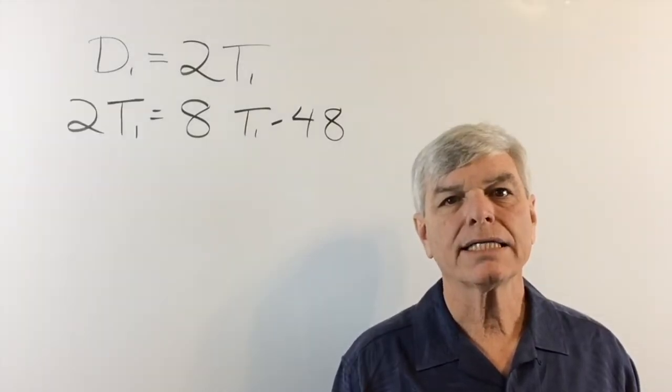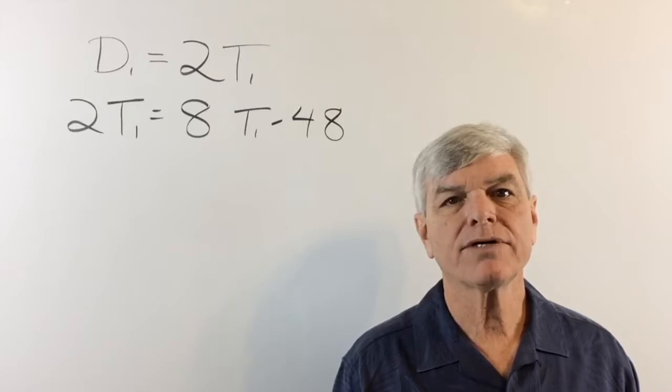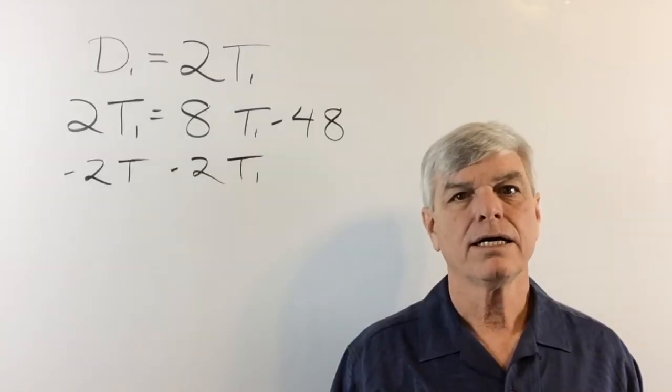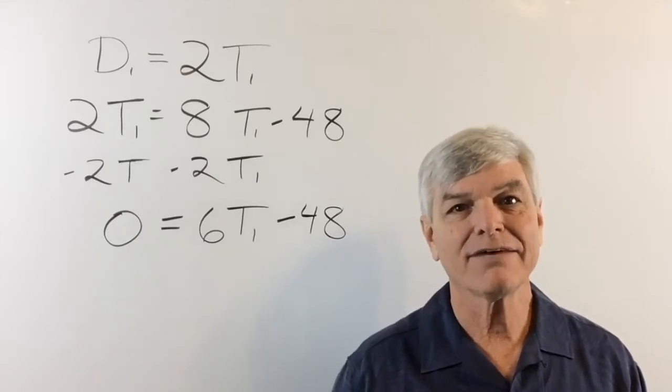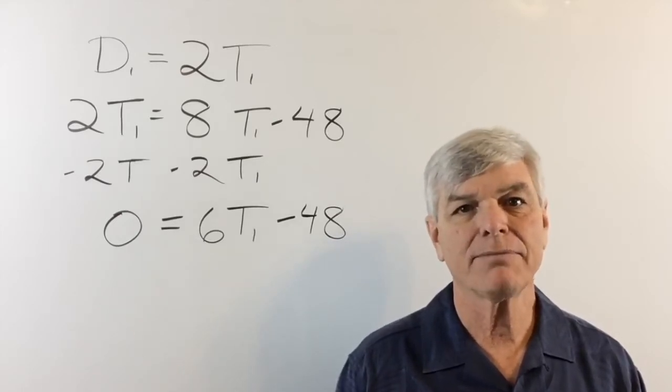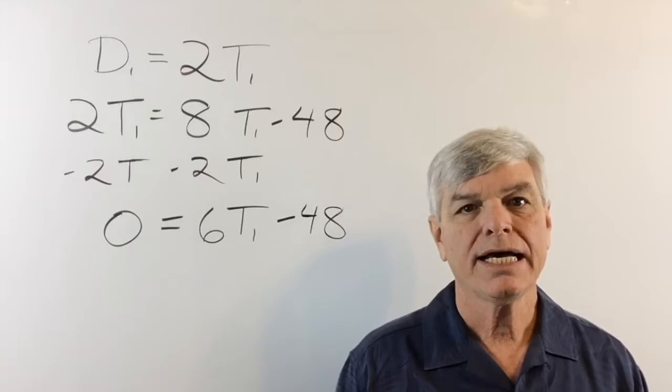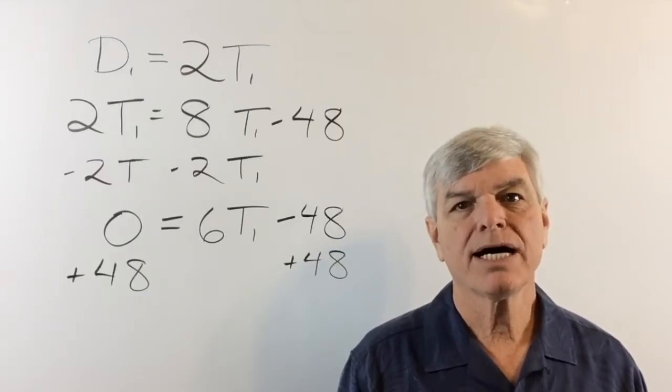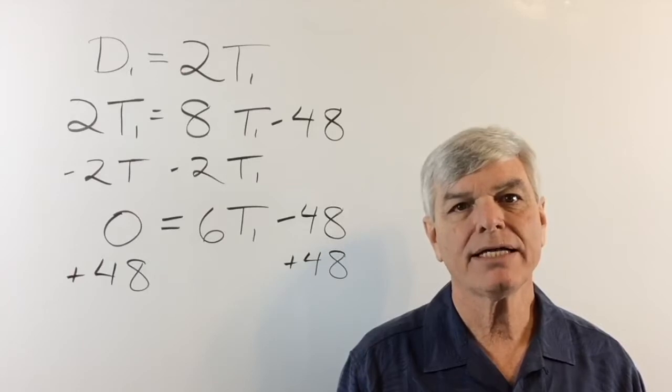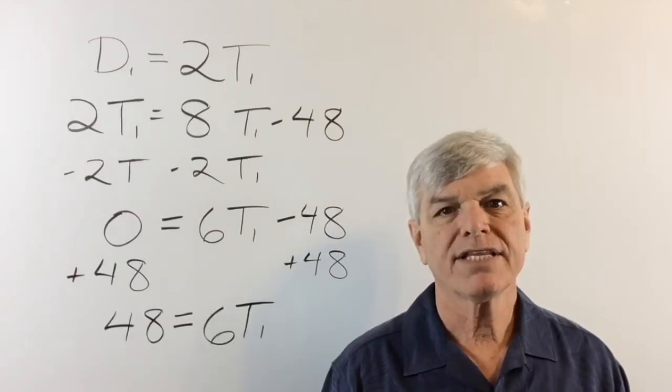Okay, let's bring the 2T1 over to the other side. Bring everything down. We got a zero on the left hand side. I don't think that's happened before but that's okay. If we bring negative 48 over, that's going to become positive 48. Bring everything down again. Divide everything by 6.